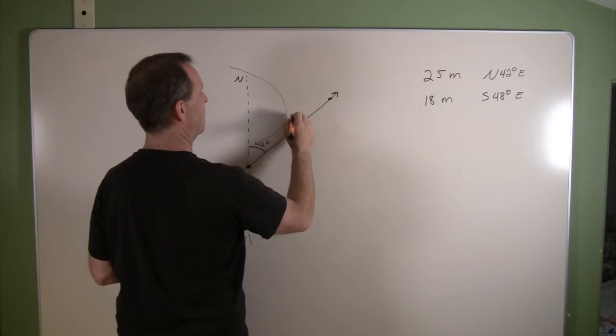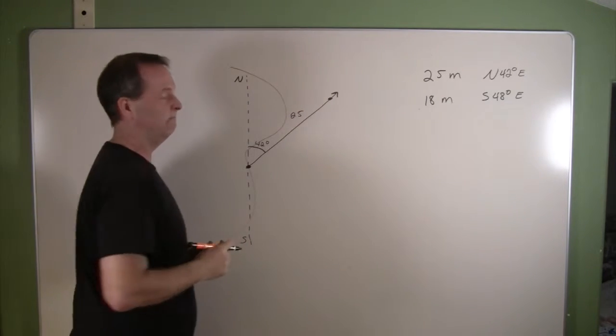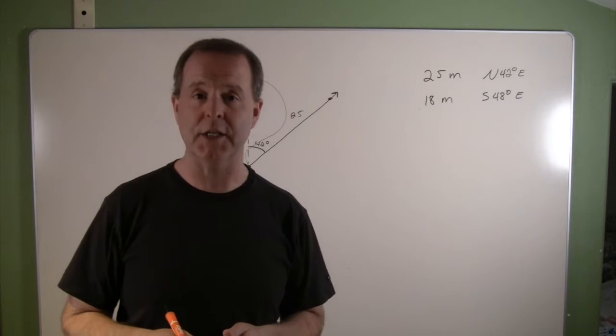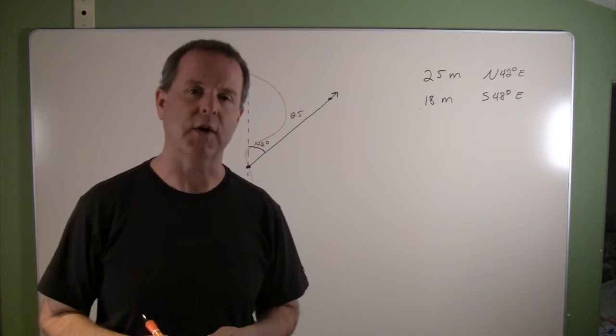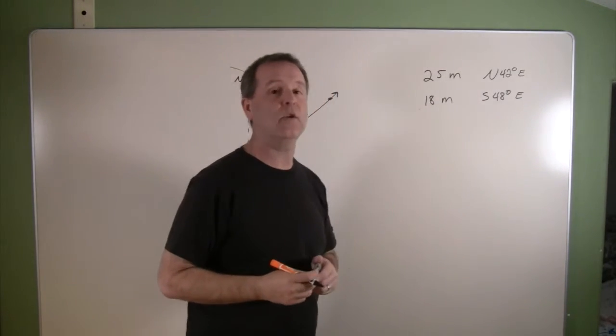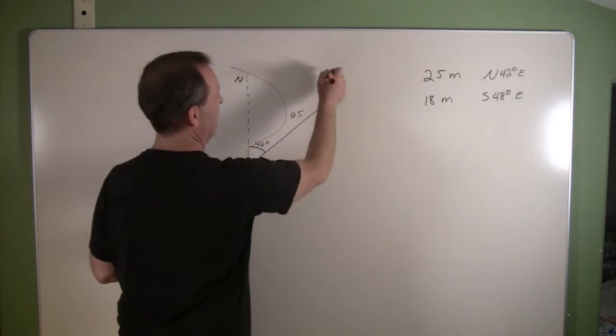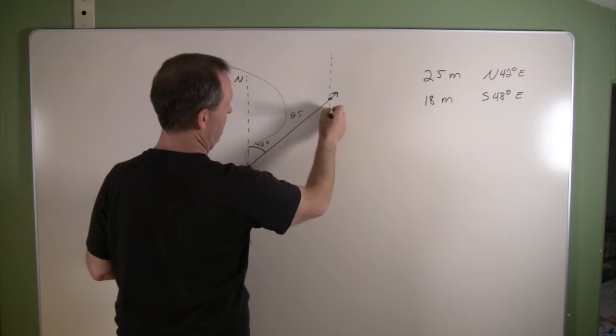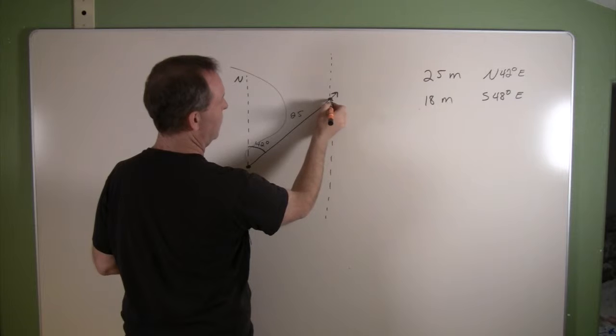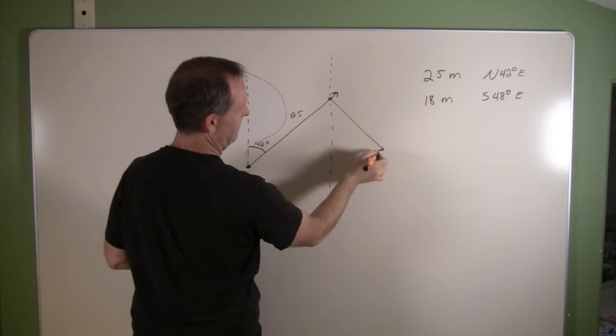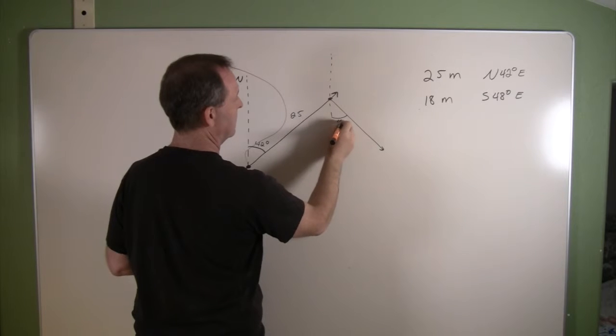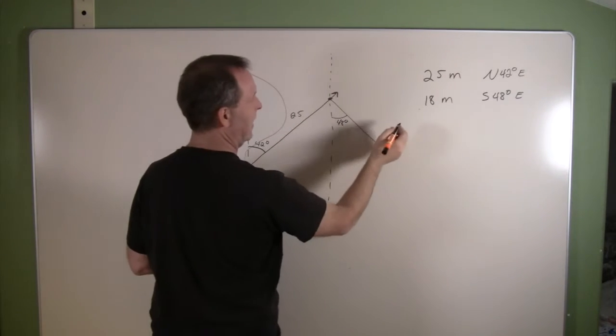We get word that the captain changed directions. He's turning his boat clockwise at a heading of south 48 degrees east. Let's figure that out. I'm gonna put a north-south line on there, and he's gonna go 48 degrees from this north-south line, and he travels out 18 miles. So that's where he is currently at.